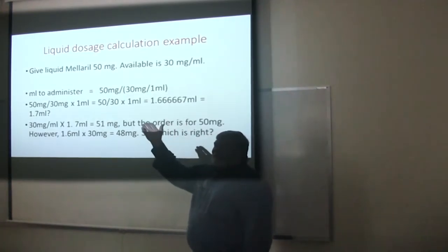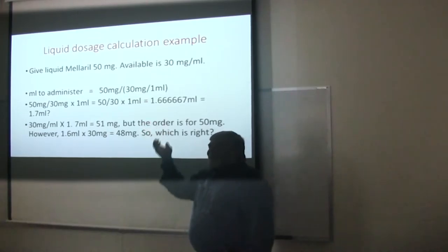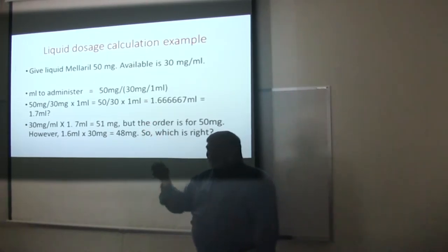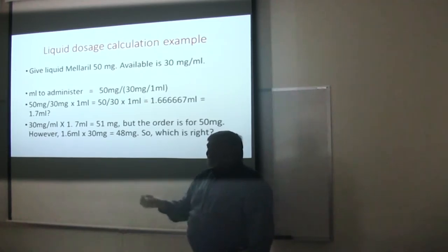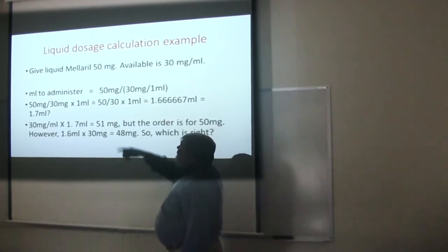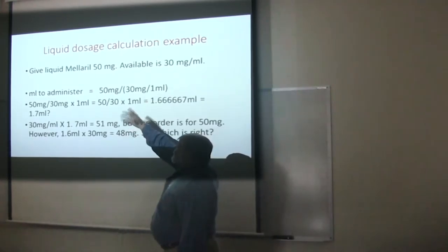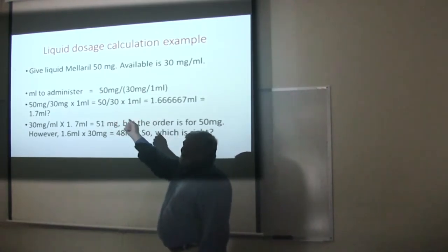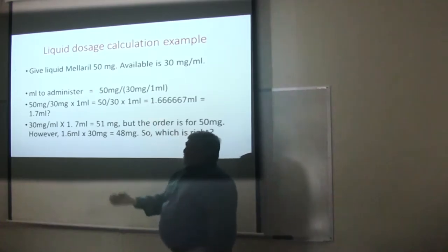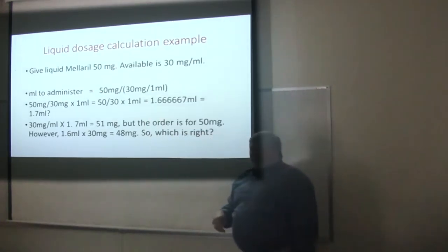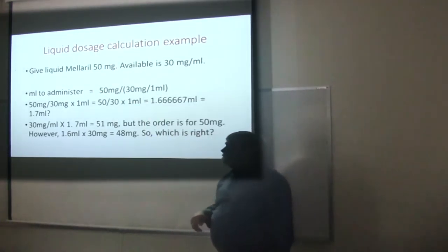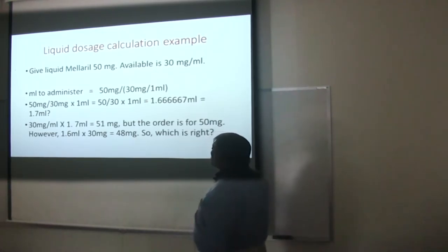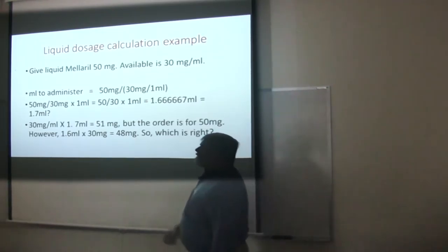We need to determine how many mLs will have the right number of milligrams in it. We're going to divide the 50 milligrams — which is the dose we want to give — by the 30 milligrams per mL in that container. So we get out our syringe and we draw up... well, we don't know how much yet, so first we have to figure that out.